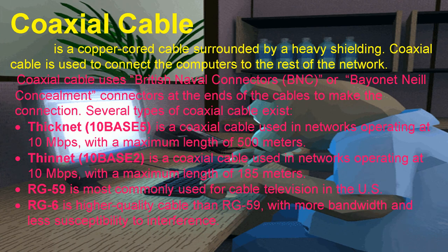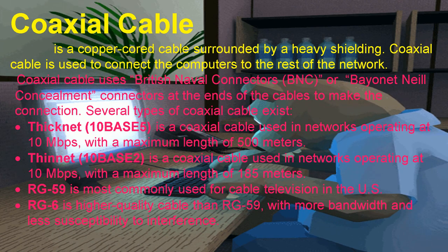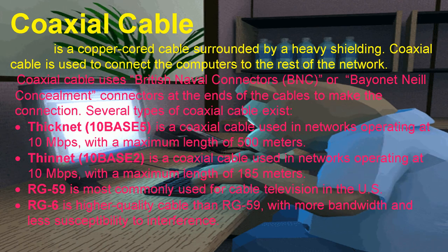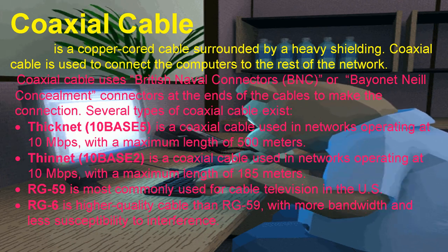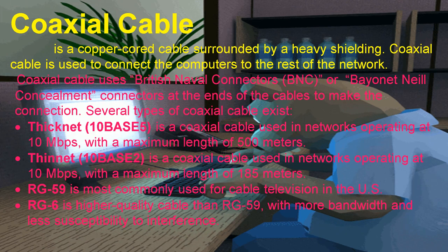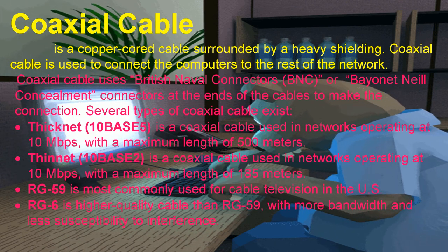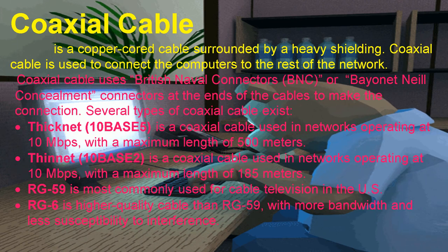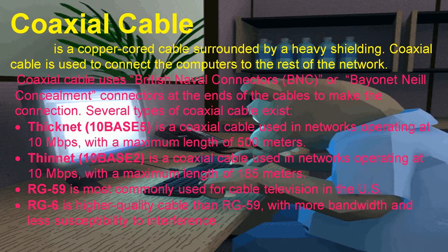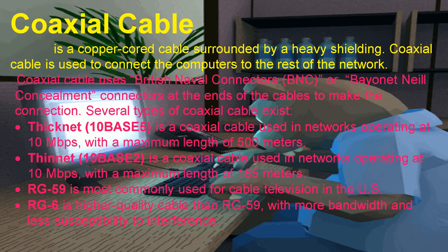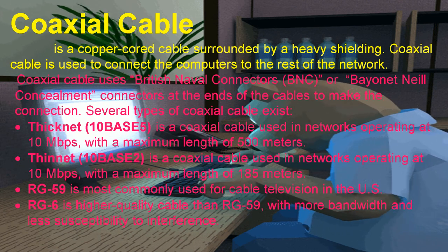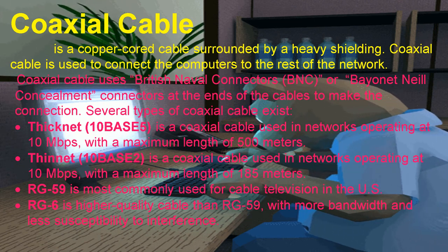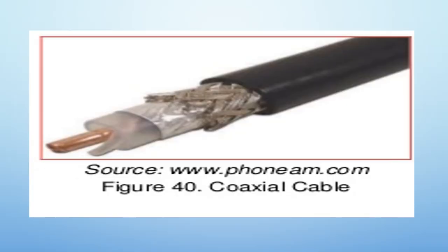Coaxial cable has a maximum length of 500 meters. Second, we have the Thin-Net or T-Base II, a coaxial cable used in networks operating at 10 Mbps with a maximum length of 185 meters. We also have the RG-59, most commonly used for cable television in the US. RG-6 is higher quality cable than RG-59 with more bandwidth and less susceptibility to interference. These are the images of coaxial cable.